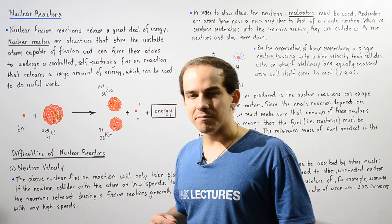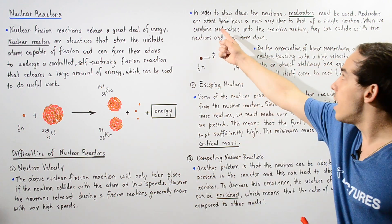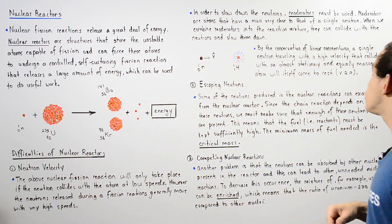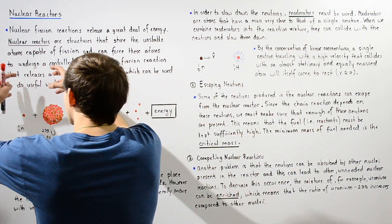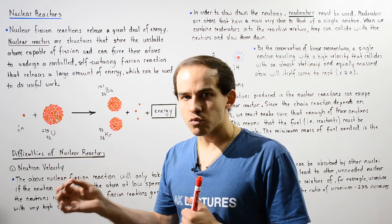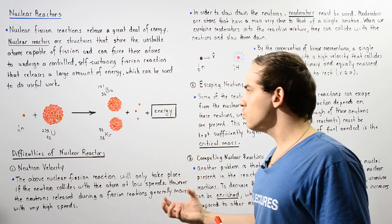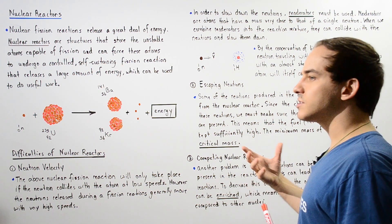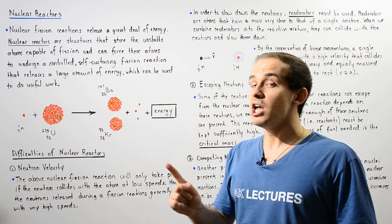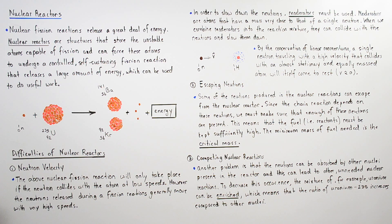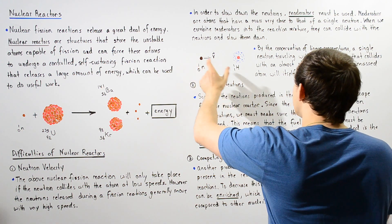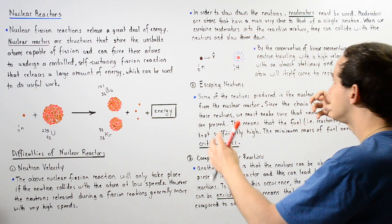How do we fix this problem? We use something called a moderator. A moderator is basically an atom that has a mass very close to the mass of a neutron. When moderator atoms are introduced, collisions between the moderators and these neutrons slow the neutrons down to very low velocities. By the conservation of linear momentum, a single neutron traveling with very high velocity that collides with a stationary moderator atom of similar mass will essentially come to a stop or reach a very low velocity.